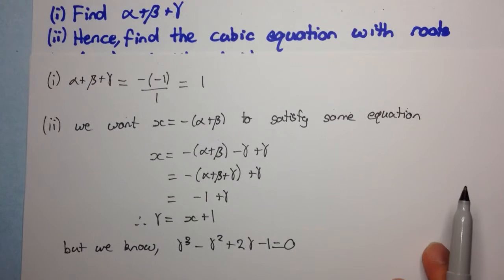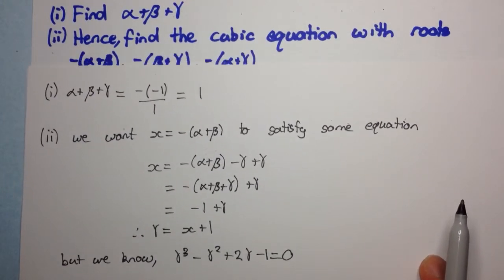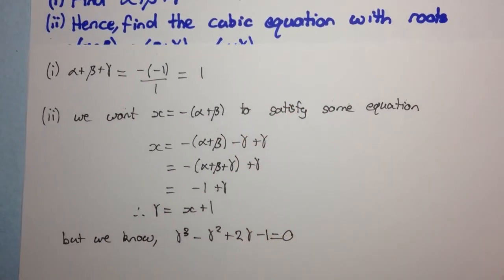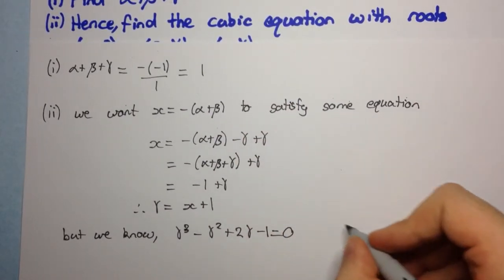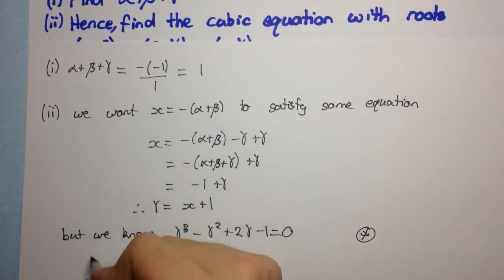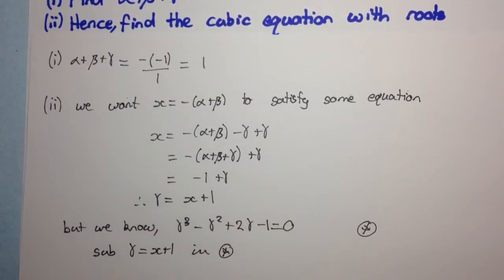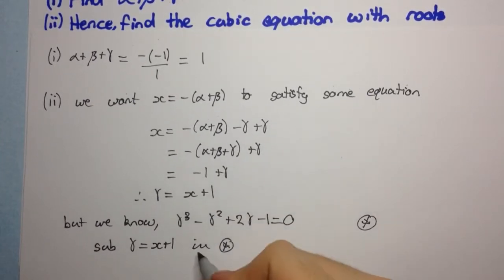So, now we can substitute this value, gamma equal to x plus 1, into this equation. And we'll get an equation with the roots minus alpha plus beta, minus beta plus gamma, and minus alpha plus gamma. So, let's call this star, and we can sub gamma equal to x plus 1 in star.